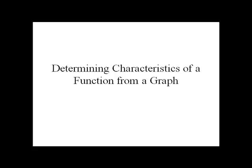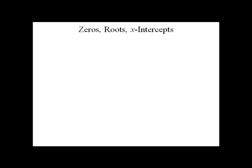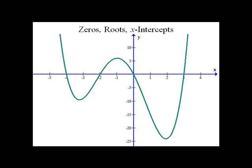In this video, we're going to look at determining characteristics of a function from a graph. The first thing we're going to look at are what are called the zeros, or the roots, or the x-intercepts of a function. This is where the graph of a function hits the x-axis.